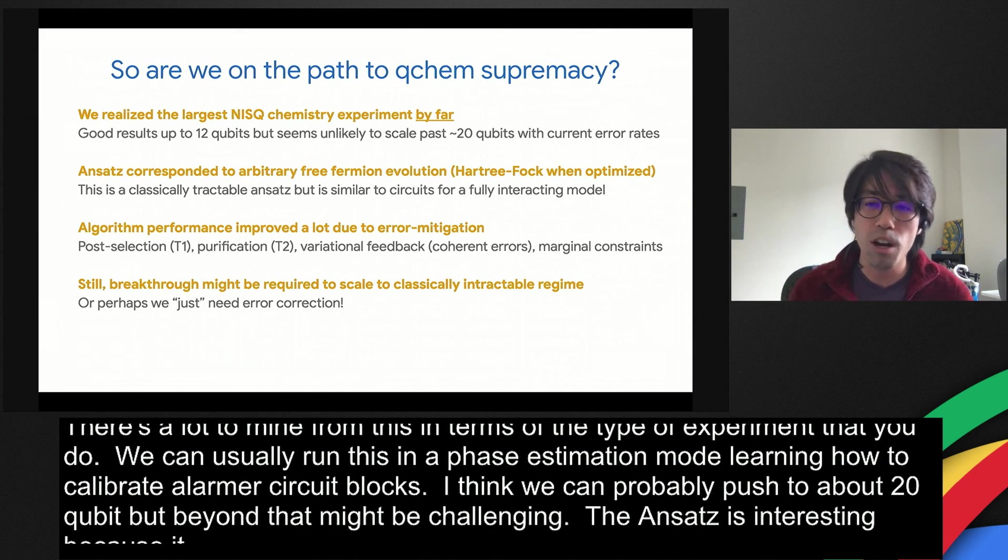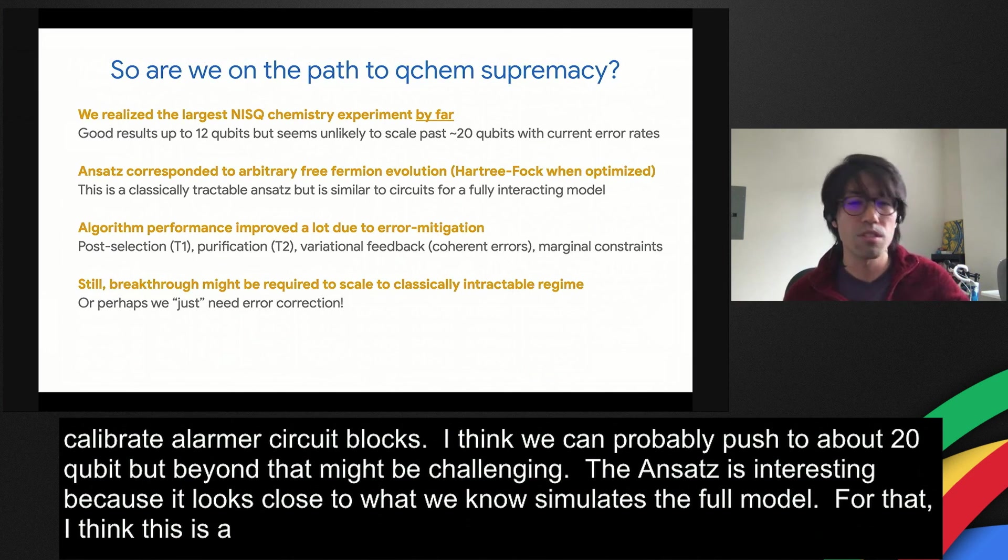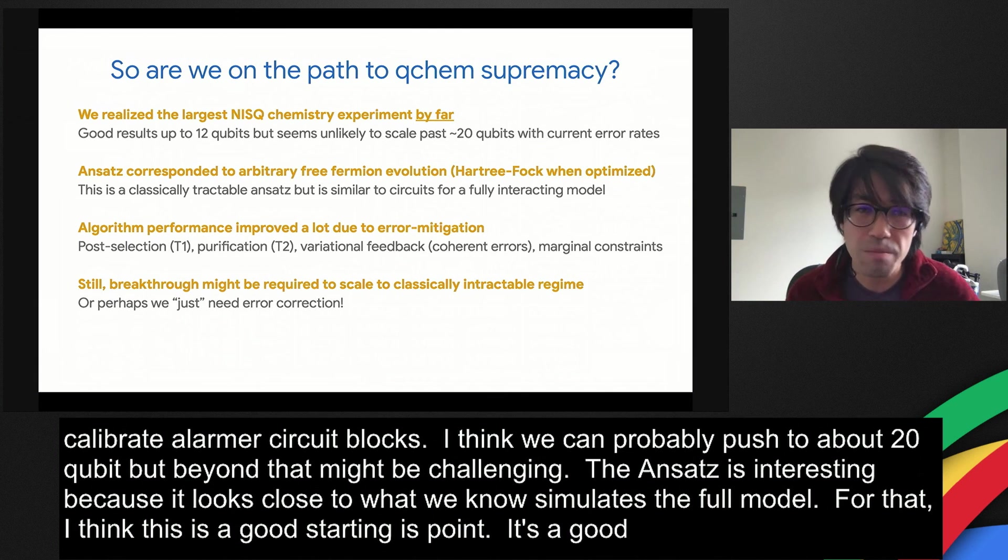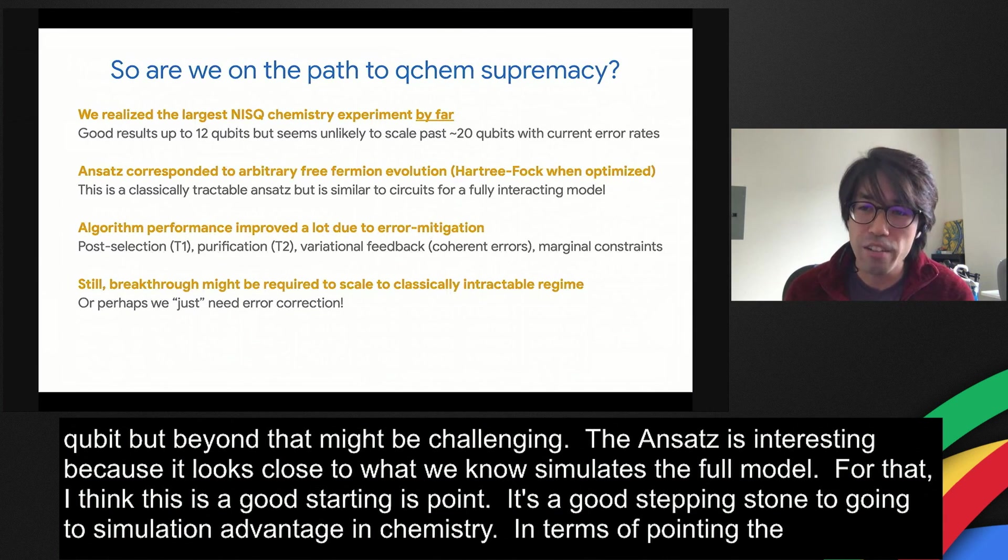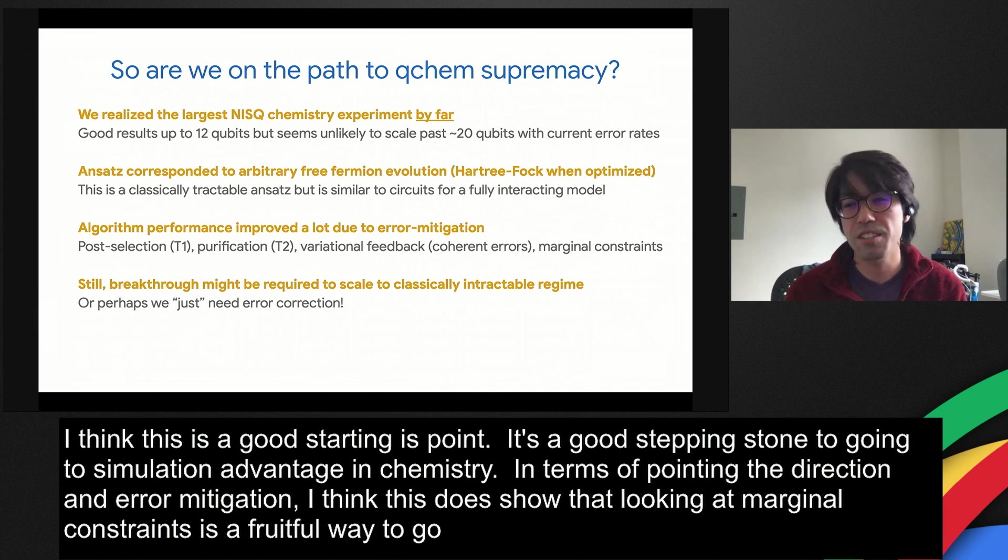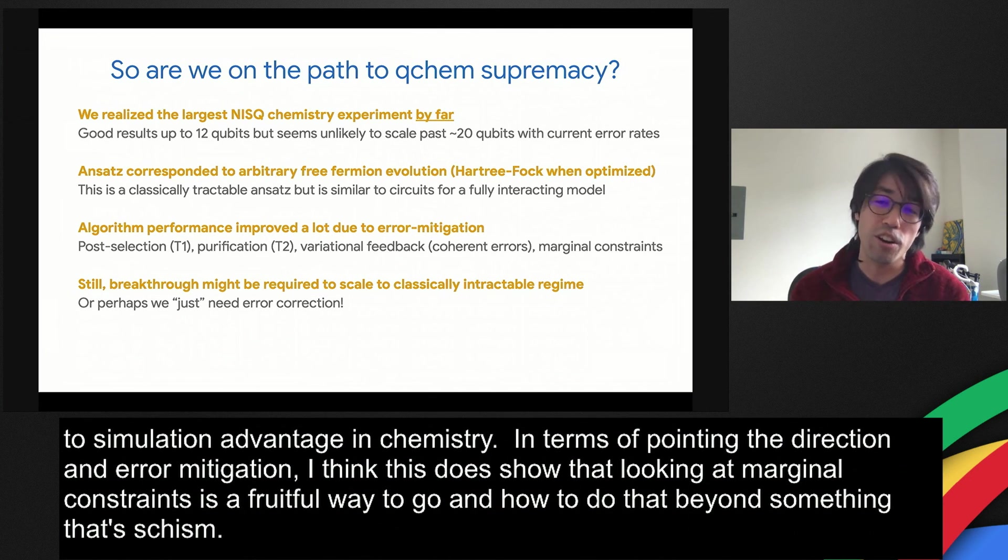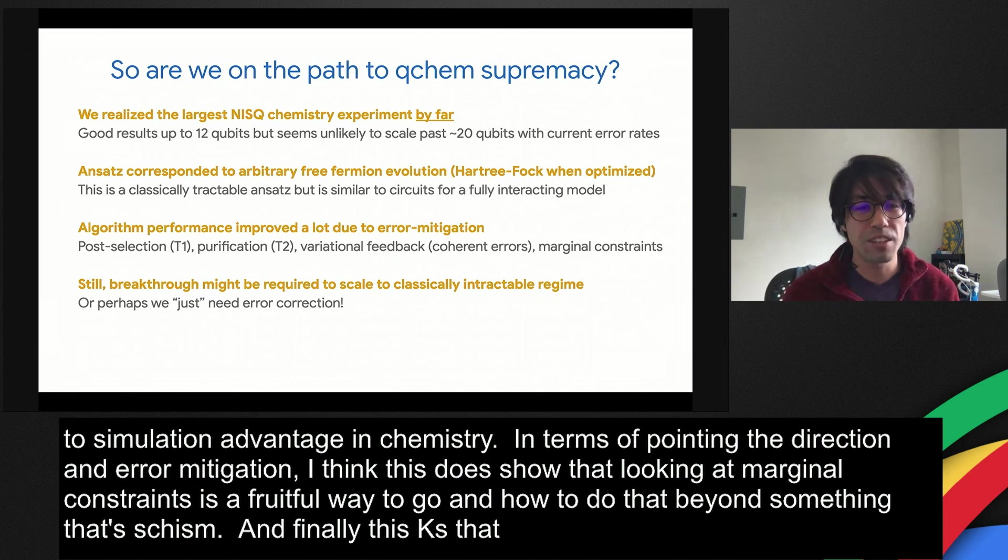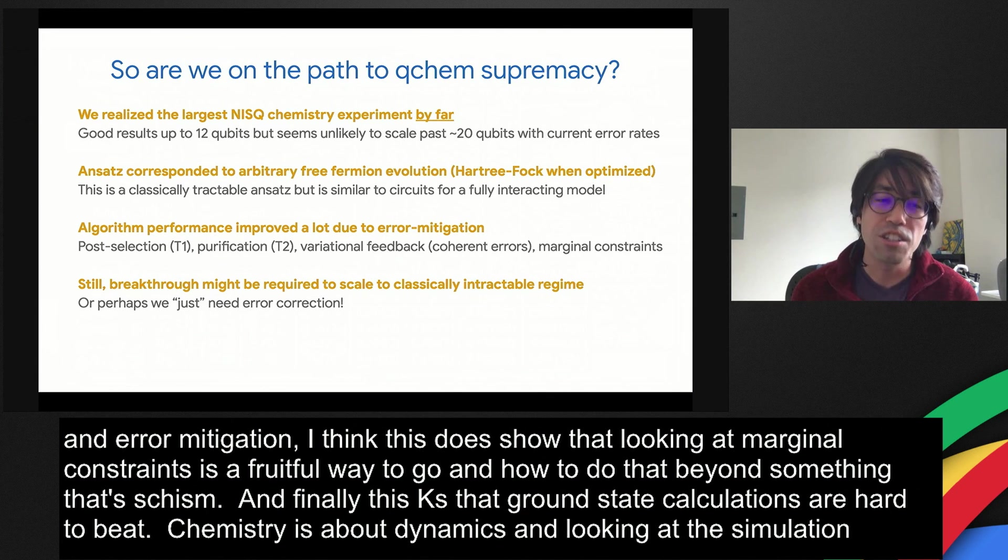The ansatz is interesting because it actually looks very close to what we know simulates the full model, namely the full fermionic swap simulation instead of just the given rotation circuits. For that, I think this is a good starting point. As Hartmann said, it's a good stepping stone to going to simulation advantage in chemistry. In terms of pointing the direction of error mitigation, I think this does show that looking at fermionic marginal constraints is a fruitful way to go and understanding how to do that beyond something that's simple like a fermionic Gaussian state is a fruitful direction. Finally, I think this confirms that ground state calculations are very hard to beat, but chemistry is about dynamics and thus looking into simulation targets like those might be a fruitful approach to achieving quantum advantage in chemistry.